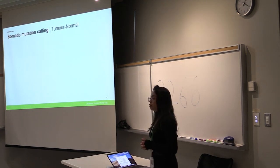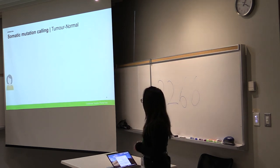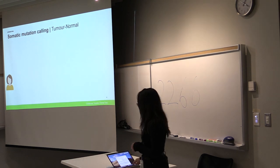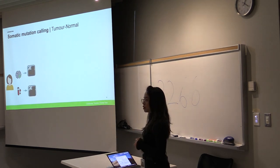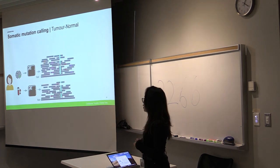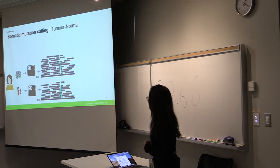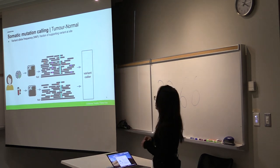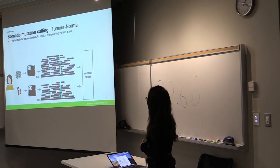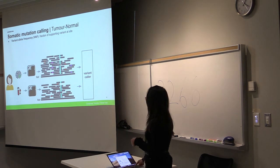So the traditional approach of doing somatic mutation calling is using this tumor normal methodology. The way that works is from a single individual we collect DNA sample from a healthy blood sample and tumor sample and we pass that on to a DNA sequencer which allows us to align that to a reference genome and it enables us to find these genetic differences. Now the task of the variant caller is to try to categorize these somatic mutations and so it's trying to categorize them as being a somatic mutation, a germline mutation, or a sequencing error or artifact.